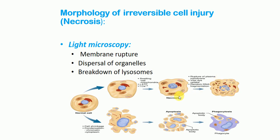Sometimes, if irreversible injury is manifested as apoptosis rather than necrosis, the cell will shrink and condense after being subjected to stress, followed by formation of apoptotic bodies.